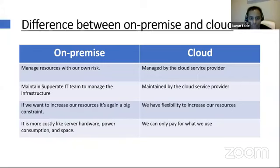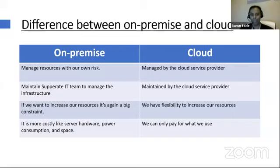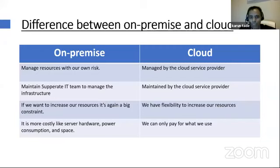That was a big constraint and that's where the cloud is catching up. On-premise is more costly — server hardware, power consumption, and space. If you have to have a data center, it would be as big as a cruise ship. Imagine a 400-500 passenger cruise ship — a data center would be that big for bigger organizations like Apple or Bank of America. They need such big real estate to handle all these servers. Now with the cloud, we don't have to take care of it — it's been taken care of by the provider, and we can only pay for what we use.